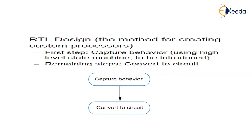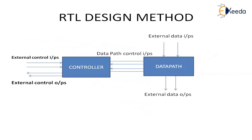RTL design is used for creating custom processors. The first step is capturing the behavior using the high level state machine, and the remaining steps take us into the particular circuit. You must have a data path and you must have a controller — combine the data path and the controller and that is your RTL design, which is nothing but a processor. Inside the controller you will have a finite state machine, a state register, and combinational logic.